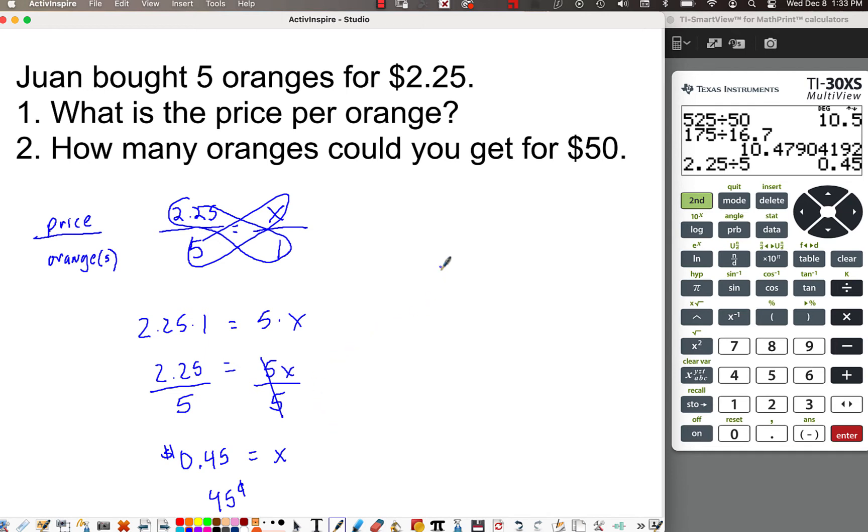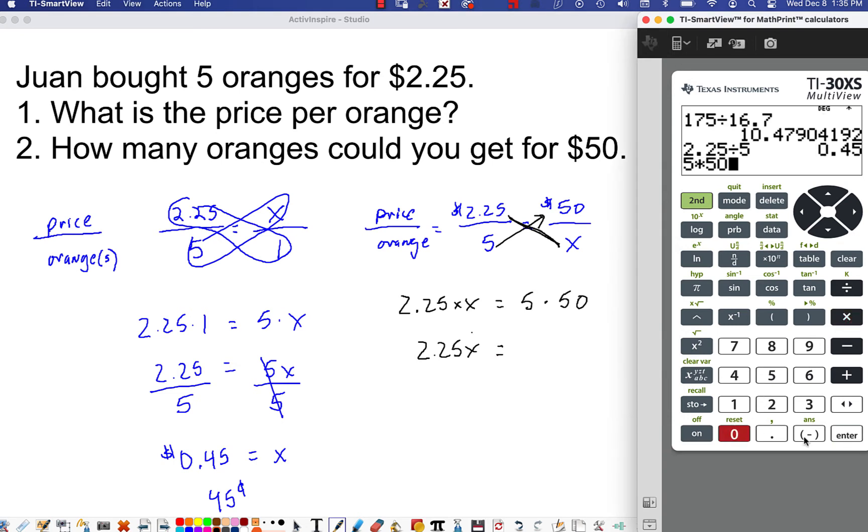All right, so now how many oranges could you get for $50? Again, I'm going to set it up as cross multiplying. I'm going to do the price over the number of oranges. And I'm going to use what they first gave us, 2.25 over five. And we want to see, well, how much could you buy for $50? It's going to be a lot of oranges. So that becomes x, we want the number of oranges. So using a different color, we'll do 2.25 times x to give us 2.25x, and then 5 times 50. 5 times 50 is going to be 250.